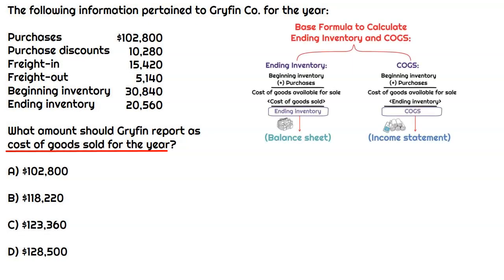As we recall from the lecture, we can use the base formula, which is also called the inventory roll forward, to calculate cost of goods sold. There in the visual on the right is the base formula for cost of goods sold.